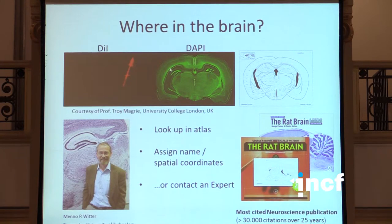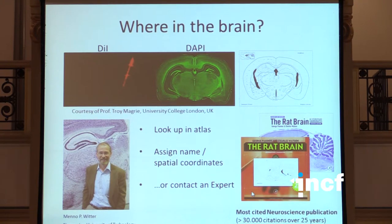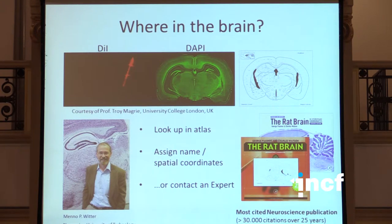You can find the corresponding location in the atlas and assign a name or spatial coordinates to it. It might not be all that simple, in particular if your section has a different angle than the atlas representation. Many researchers end up needing to contact an expert to consult — especially if working with the hippocampus and wondering whether an electrode was in one sub-region or another. Our collaborator Menno Witter in Trondheim received many such requests, which motivated him to start working in the field of atlasing.